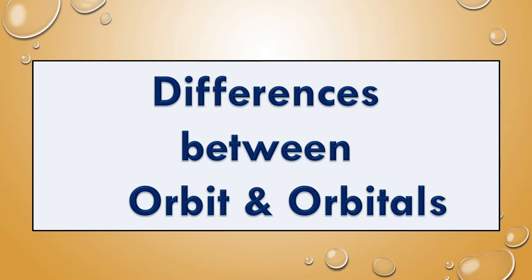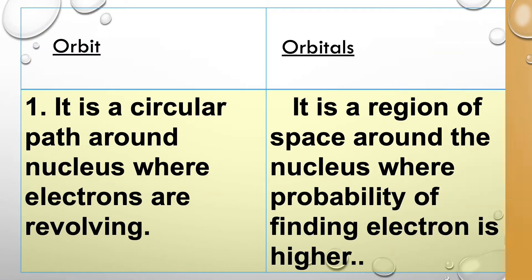In this video, we are going to see the differences between orbit and orbitals. Orbit is a circular path around the nucleus where the electrons are revolving. But orbital is a region of space around the nucleus where the probability of finding the electron is greater.